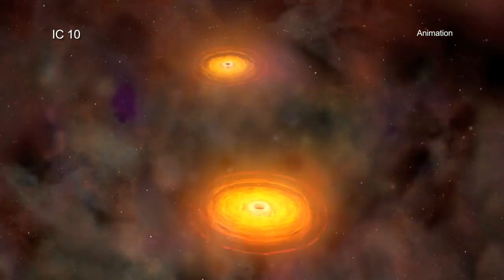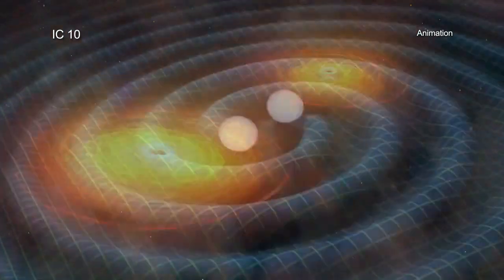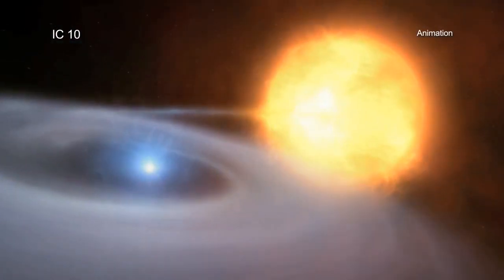The end result is two compact objects, either a pair of black holes, a pair of neutron stars, or a black hole and neutron star.